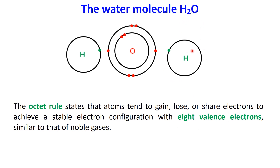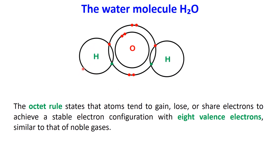which states that atoms are most stable when they have eight electrons in their outermost shell. In a water molecule, each hydrogen atom shares one electron with oxygen, while oxygen shares one of its electrons with each hydrogen. This creates two covalent bonds, one between oxygen and each hydrogen. By sharing these electrons, oxygen achieves a full octet and becomes stable.